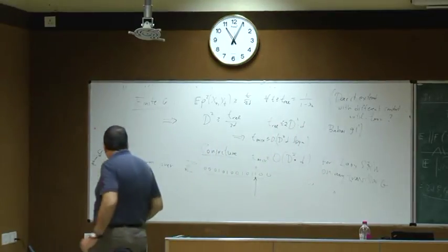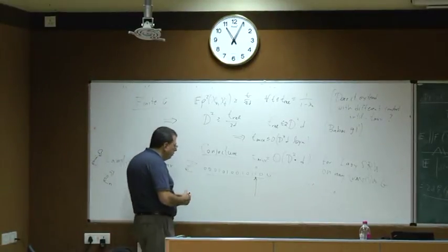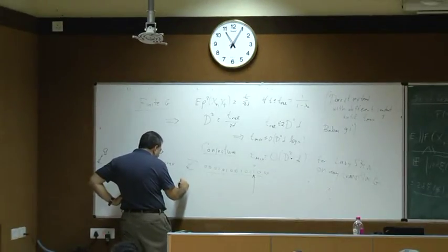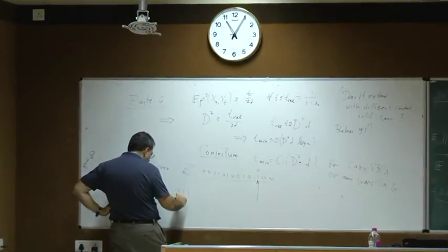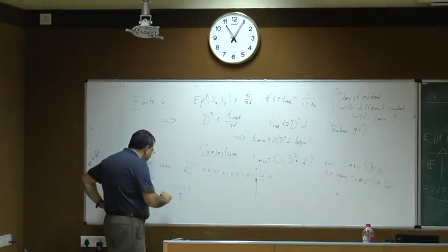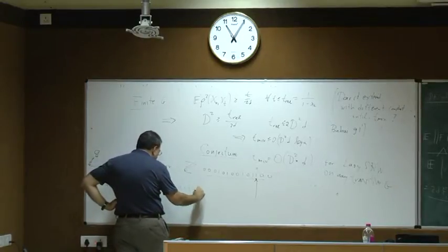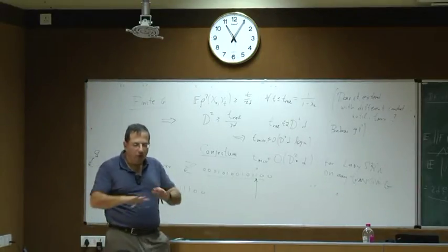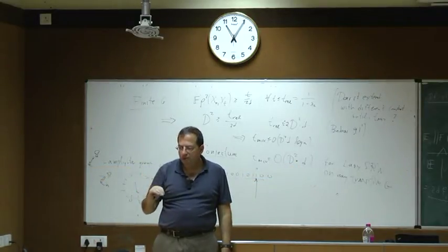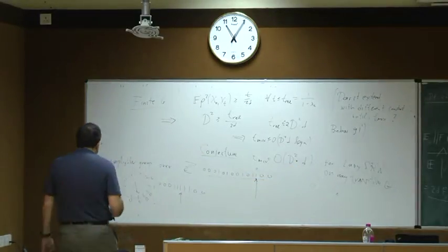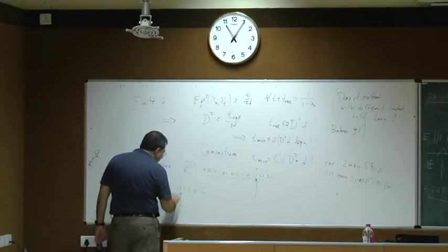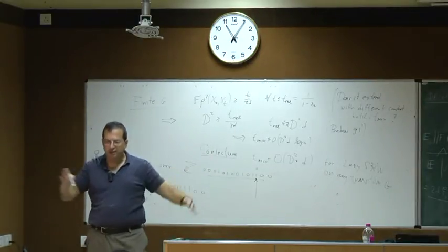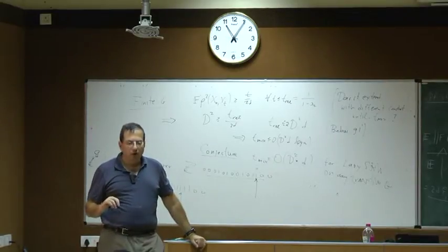This graph has dead ends. Consider a configuration with a block of ones around the marker at the origin and zeros outside. The identity of the group is when all lamps are off and the marker is at the origin.